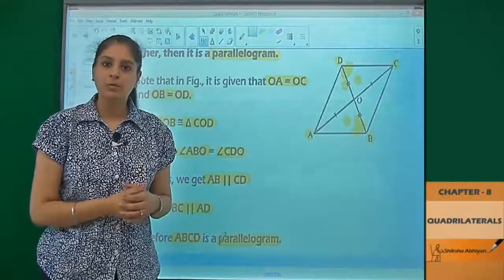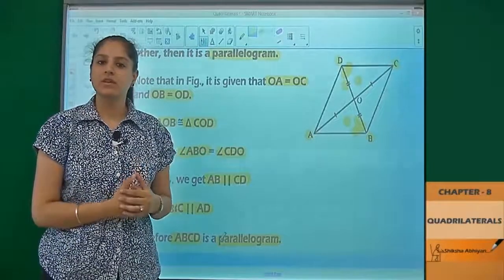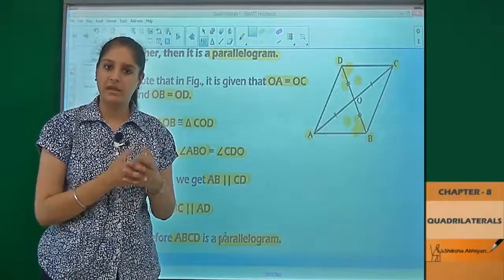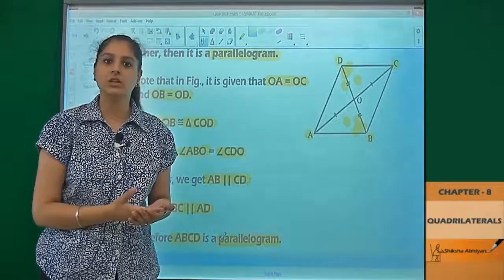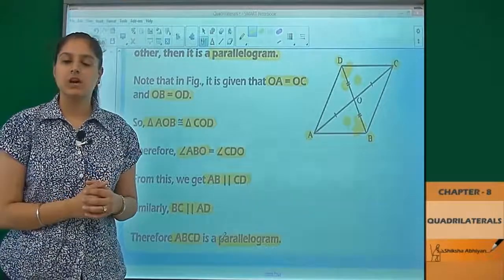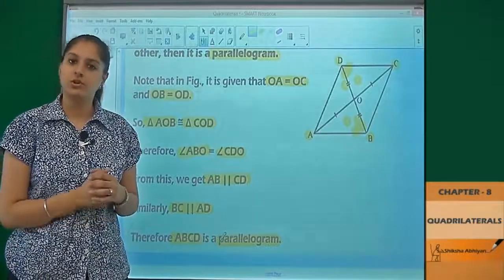It is proved that if you have a quadrilateral given and its two diagonals are bisecting each other, then that quadrilateral is a parallelogram for sure.